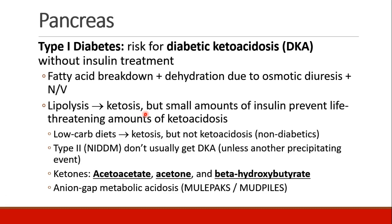In normal patients, even tiny amounts of insulin will prevent life-threatening amounts of ketoacidosis. For example, patients on a very low-carb diet will go into ketosis, but not ketoacidosis. Even type 2 diabetic patients don't usually get diabetic ketoacidosis, unless they have another precipitating event, like an infection or sepsis.